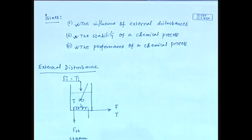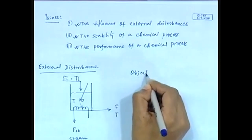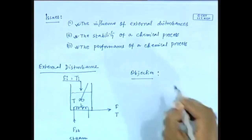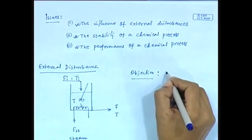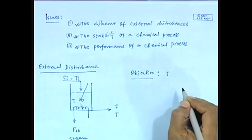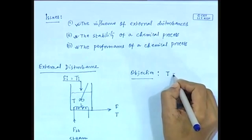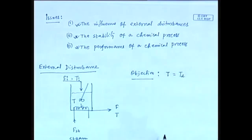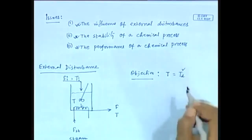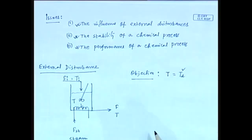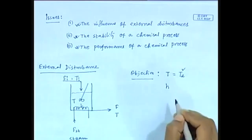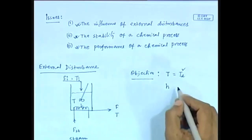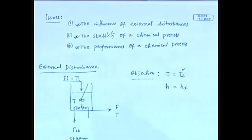The objective of this process: first, we need to maintain the liquid temperature T at its desired value T_d. Second, we need to maintain the height of liquid in the tank at its desired value H_d. These are the two objectives of the heating tank system.